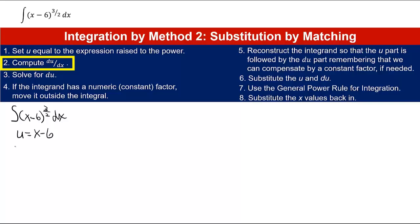Step 2 says to calculate du/dx, which that would be the derivative of x minus 6 is just 1. As you can see from step 3, we want to solve for du. So what we want to do is multiply both sides by dx, and that will let us solve for du. We find out that du is 1 dx, or just dx.